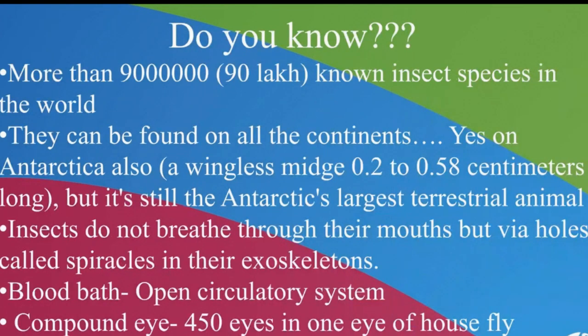What is unique about insects? The pie chart showed that the maximum amount of the faunal kingdom is occupied by insects. More than 90 lakh insects have been discovered yet, and scientists think the same number will be discovered in a few years. They are found in each and every continent including Antarctica. In Antarctica, the largest terrestrial animal is just two to five or six millimeters in length — yet it is still the largest terrestrial animal there.